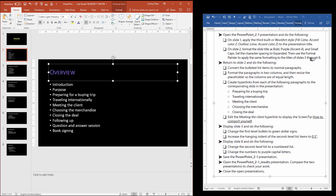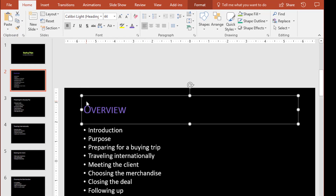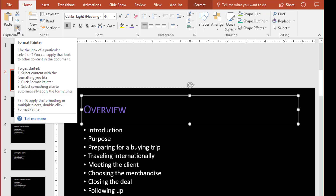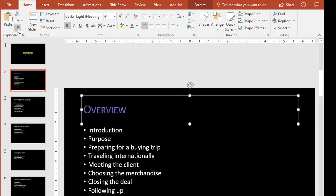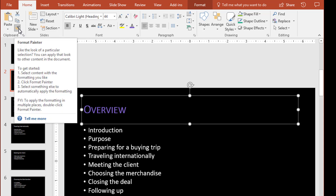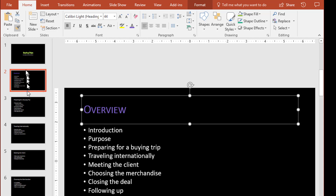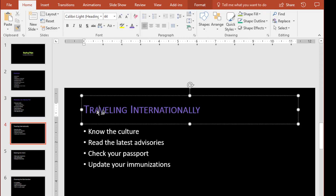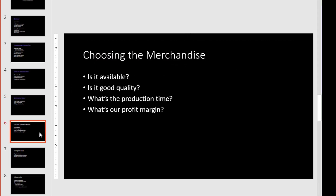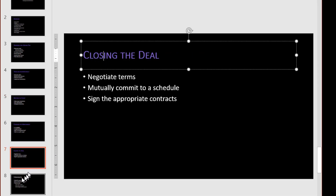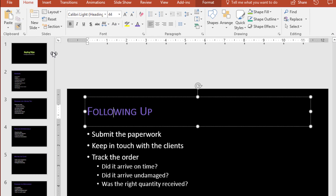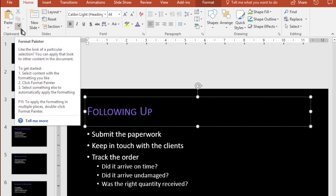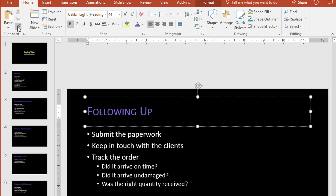Now it wants us to use the Format Painter and apply the same formatting to the titles of slides 3 through 8. Anytime I want to use the Format Painter and apply it multiple times, I'm going to double-click on the Format Painter to make sure it stays highlighted. Now when I move away, you can see it stays highlighted. Over here in the thumbnails I can click on slide 3 and click where the title text is, then 4, 5, 6, 7, and 8. When I'm through, I'll click once on the Format Painter to turn it off.